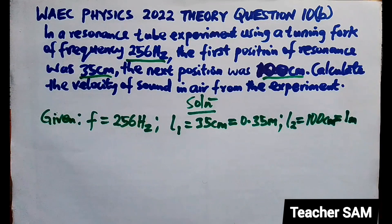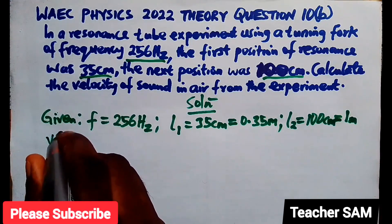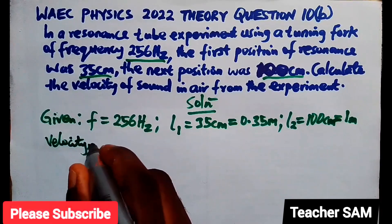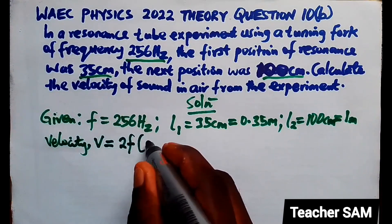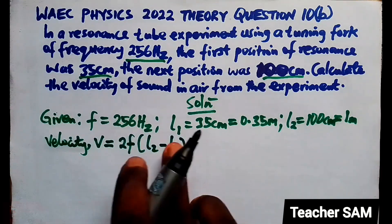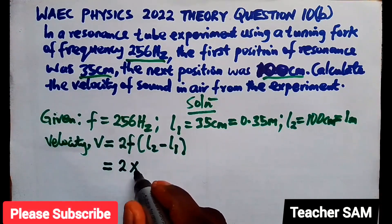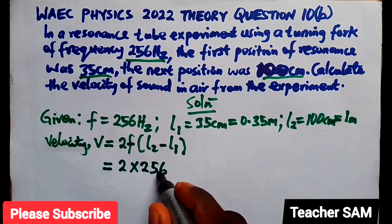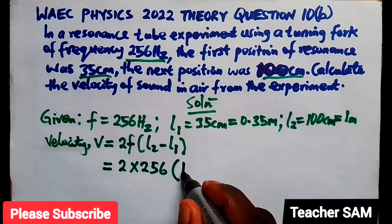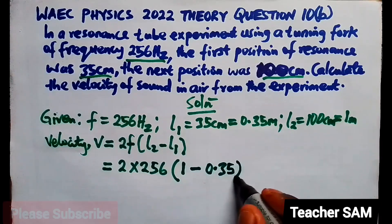Now we are asked to calculate velocity. The velocity of sound for this type of experiment is given by the formula: V equals 2F times (L2 minus L1). This is equal to 2 times 256, with L2 equal to 1 meter and L1 equal to 0.35 meters.